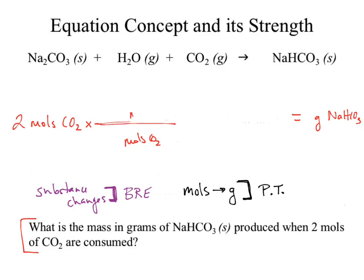So I could go into moles of sodium hydrogen carbonate. This is now a mole-mole ratio — the only thing I'm changing is the substance. To change the substance, I need the balanced reaction equation. So I could go back up to the equation and look at my coefficients. For the sodium hydrogen carbonate, what's my coefficient? One. And for the CO₂?